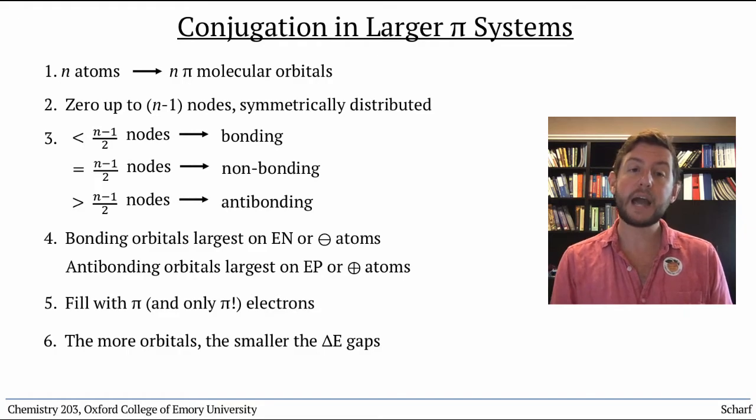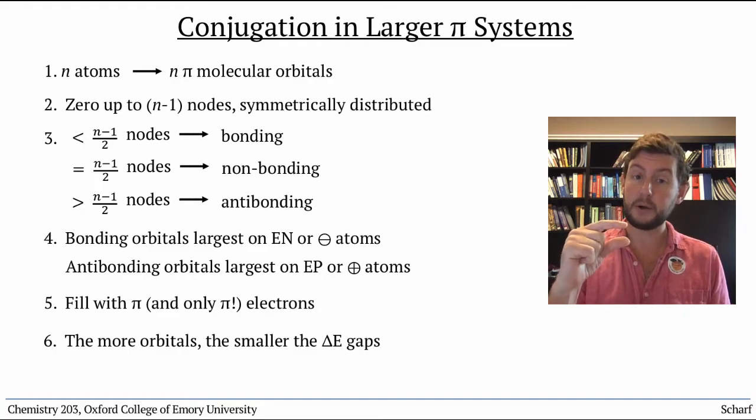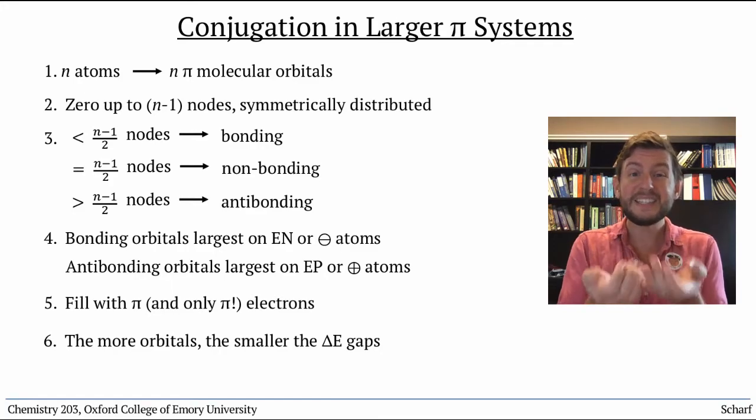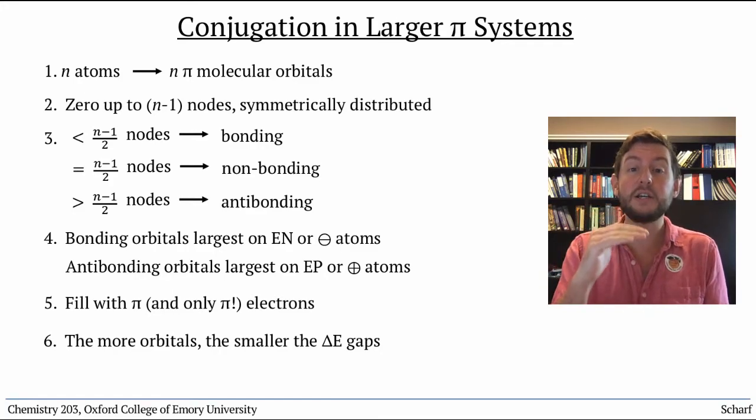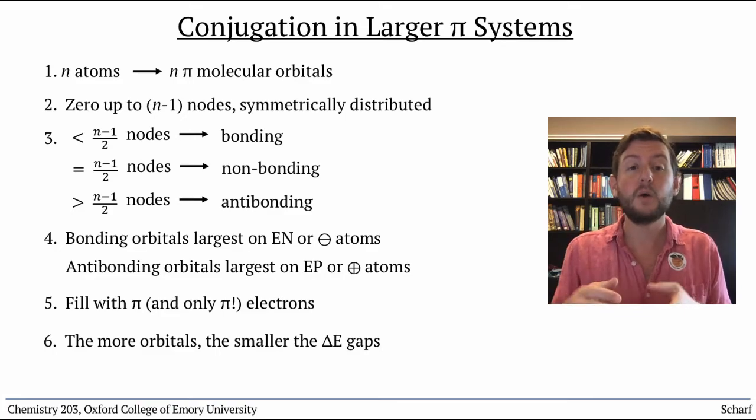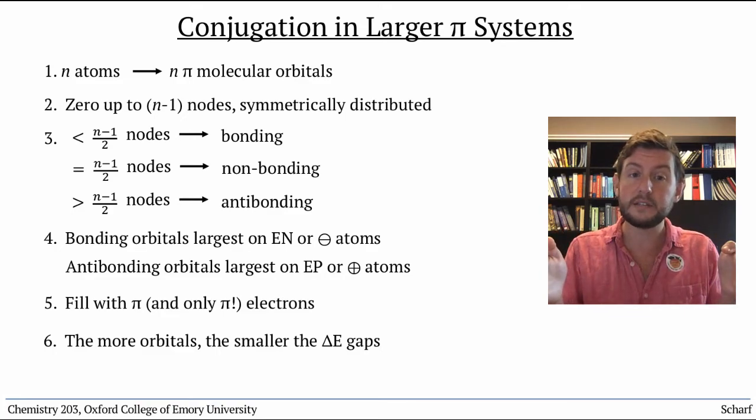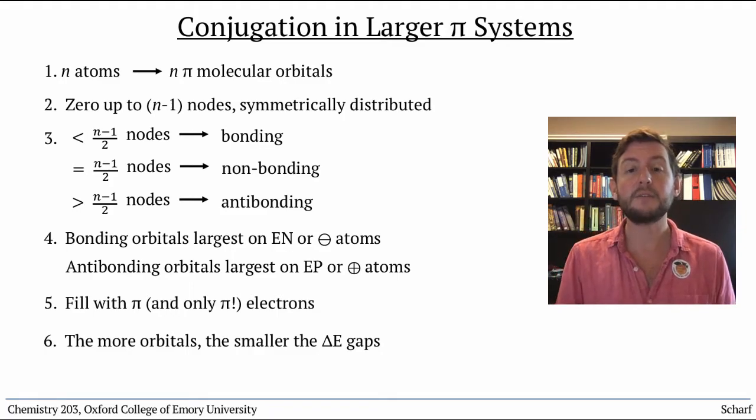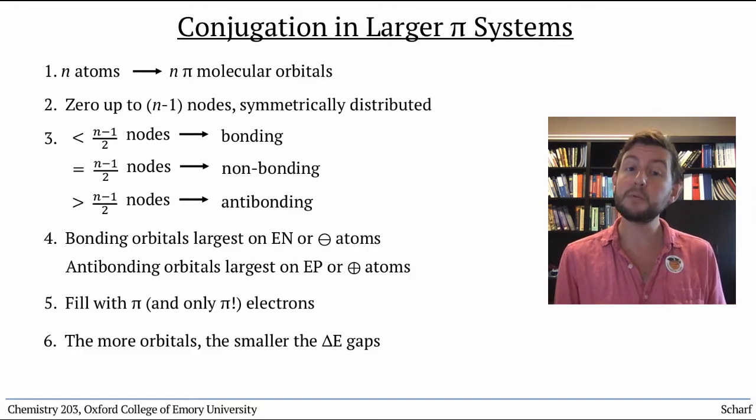The energy gap between the HOMO and LUMO corresponds to the energy of photons that can be absorbed by that molecule. Short conjugated systems typically absorb high energy ultraviolet light, while longer conjugated systems have smaller HOMO-LUMO gaps and therefore absorb lower energy photons, usually in the visible region of the spectrum.